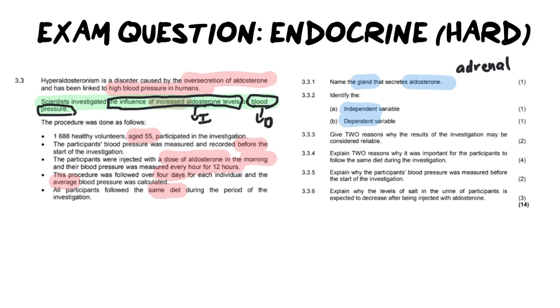Moving on into our next question and this one is about reliability. So it says give two reasons why the results of the investigation may be considered reliable. Now again this is definitely one of our weaknesses. We don't know the difference between reliability and validity. Reliability is all about repeating the experiment and it's about results. Validity is about variables and that's about keeping everything the same. Same time, same place, same people, same age, etc.